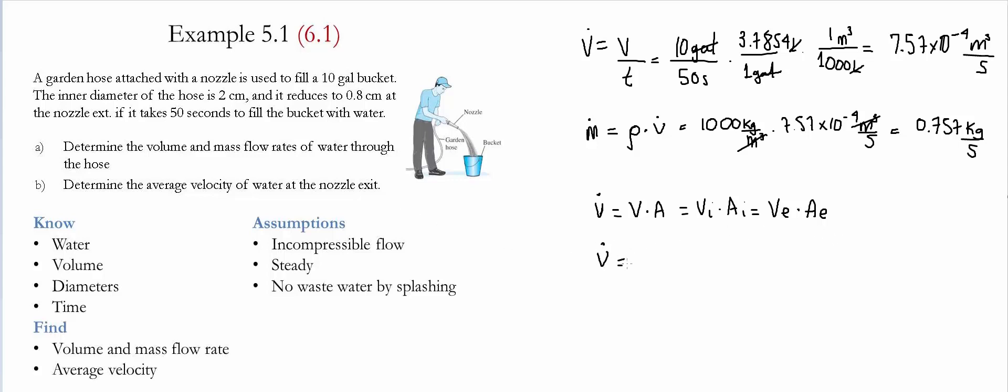The volume flow rate we already calculated as 7.57 times 10 to the negative 4 meter cubed per second. The area is going to be a circle, and the cross-sectional area is simply pi over 4 times the diameter squared. The diameter we have is 0.8 times 10 to the negative 2 meters.